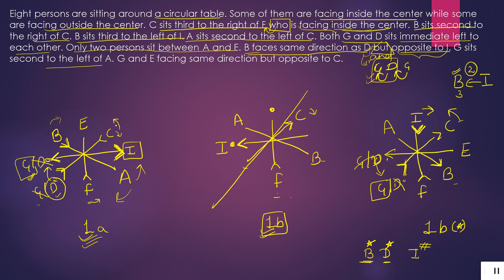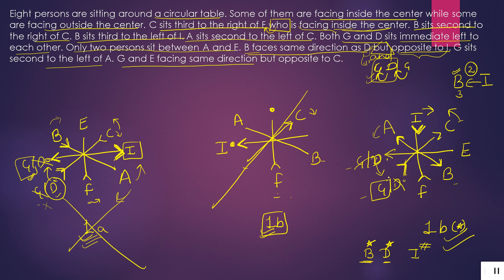Checking our remaining case: G is not in the correct spot in one diagram — that case is wrong, so we cancel it and continue with the valid case. Final clues: A left second is G — confirmed. G and E face the same direction; since G is facing inside, E also faces inside. But opposite to C — C faces outside. So this diagram is our correct final arrangement.